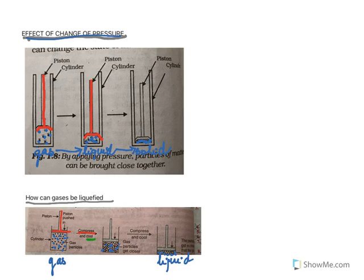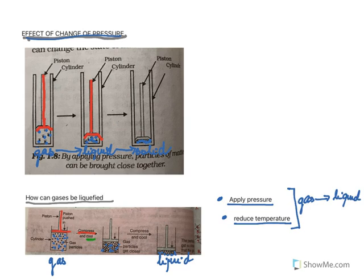So to liquefy gases we need to do two things. We need to number one apply pressure and number two we need to reduce temperature. When we do both these things the gas gets converted into liquid. That is called liquefying the gas.